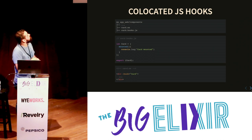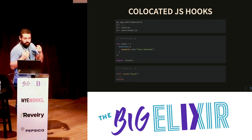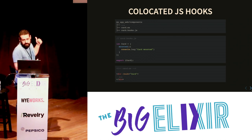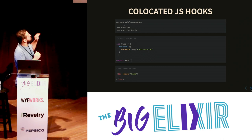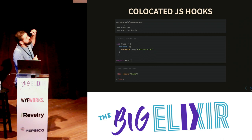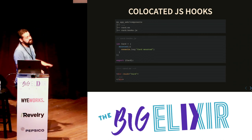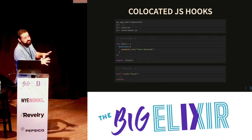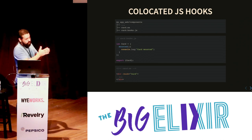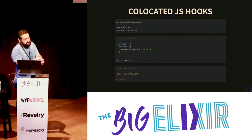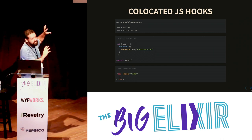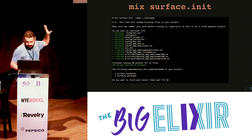Another feature is co-located JS hooks. Every time you create a hook normally, you need to go to app.js and add that hook to the list. With Surface, you just create a co-located file, define a hook, and reference it — you don't even need to go to app.js. I love to have everything that belongs to a component co-located.